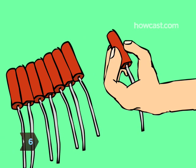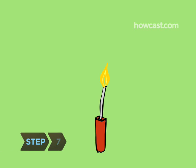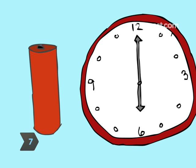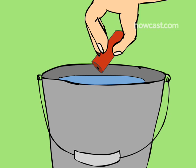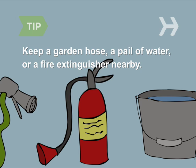Set off fireworks one at a time. Eye protection is strongly recommended. Don't try to reignite a firework that doesn't go off. Leave it alone for at least 20 minutes and then soak it in a bucket of water. Keep a garden hose, a pail of water, or a fire extinguisher nearby in case you need to put out flames.